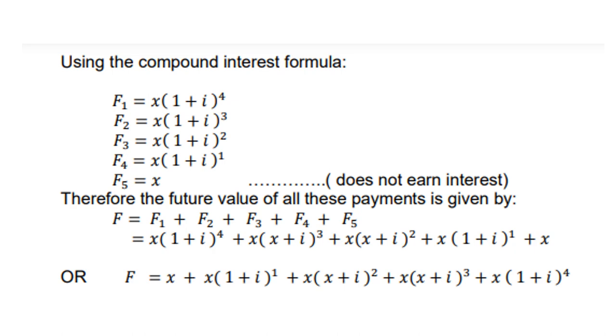F1 is x(1 + i)^4, it's 4 years. Then F2 is x(1 + i)^3, F3 is x(1 + i)^2, and F4 is x(1 + i)^1. F5 is x, now that does not earn interest.